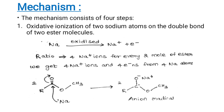The mechanism consists of four steps. Two esters combine in the presence of molten sodium to form an acyloin. Step one is the oxidative ionization of two sodium atoms on the double bond of two ester molecules. Sodium is oxidized to form a Na⁺ ion and an electron. The ratio is four Na⁺ ions for every two molecules of ester, giving four Na⁺ ions and four electrons from four sodium atoms.